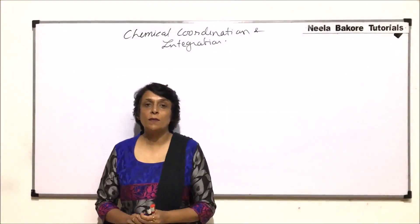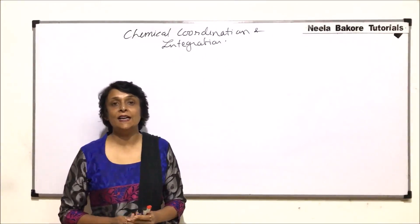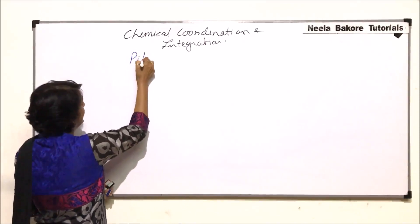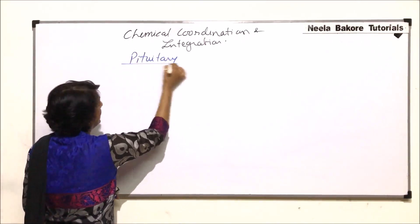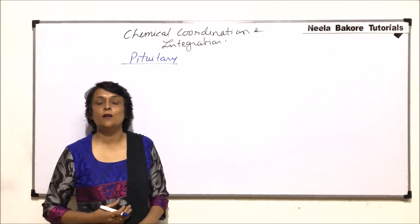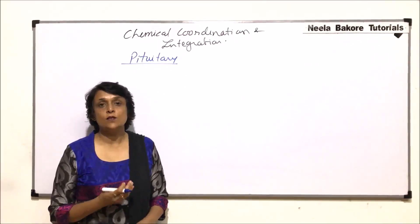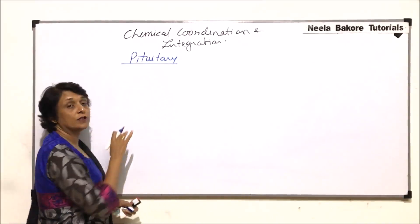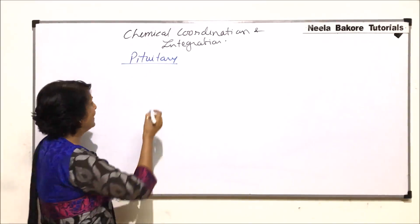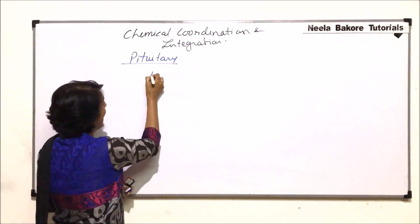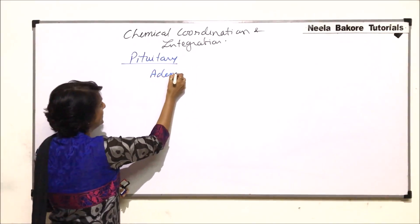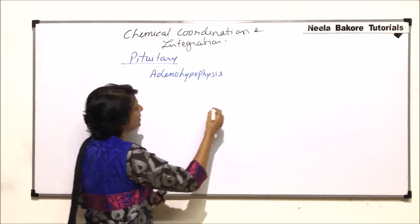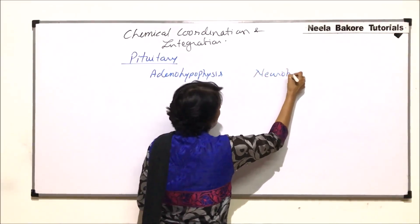In this video we will talk about the pituitary gland, its structure and the hormones it secretes. First let us talk about the anatomical part of the gland — what it is developed from, which part it arises from. The pituitary is divided into two main parts: adenohypophysis and neurohypophysis.